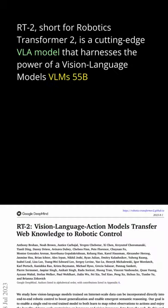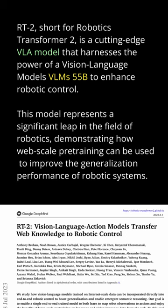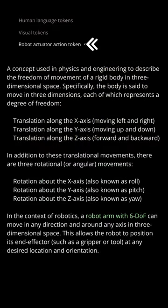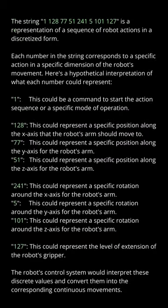RT2 is a VLA model based on a 55 billion trainable parameter LLM that integrates directly the low-level robotic control. Three degrees of translation, three degrees of rotational freedom. We have an action encoding that's explained here, and here you see how the tokenization string is read by the machine.